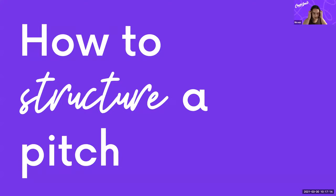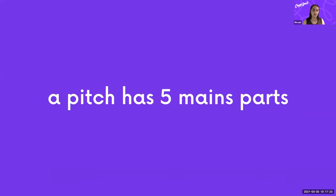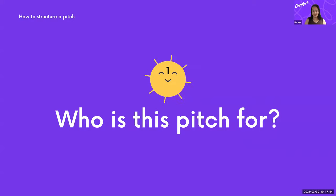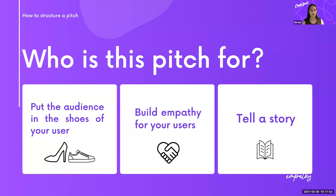So let's jump into how to structure a pitch. A pitch has five main parts: who is your pitch for, what problem are you solving, what is the solution you've created, how are you actually going to solve it — the nitty-gritty of how your solution works — and how much value does it add to the customer, business, or user?